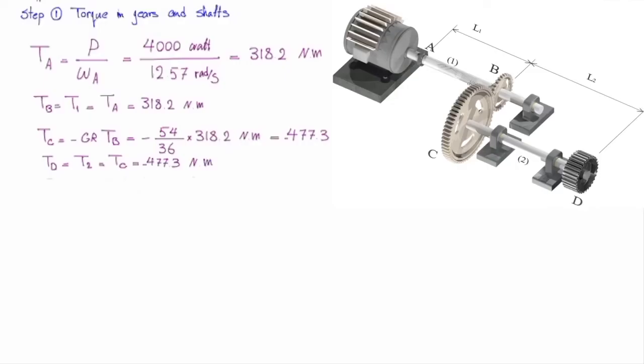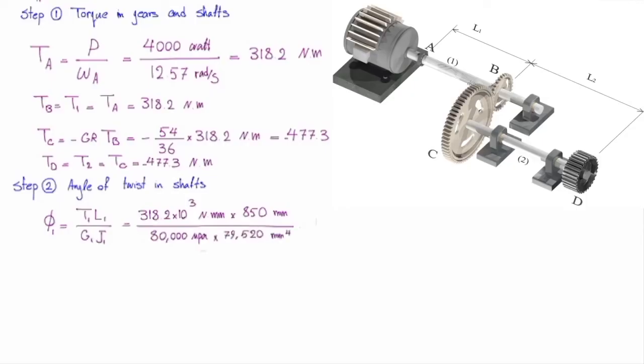In the second step, I'm going to determine how much is twist in each of these two shafts. Twist in shaft number 1 is TL over GJ. We have everything that we want. We just plug it back into this equation. So torque 1 is 318.2. That is Newton meter. I have to convert that into millimeter by multiplying that by 1000. Length of that shaft is 850 millimeter. G is 80,000 megapascal. And J is the one that we have obtained. That gives us 0.04252 radian. That is the twist in the first shaft.